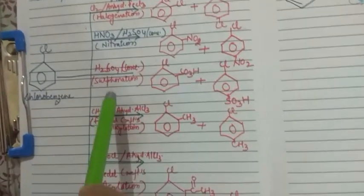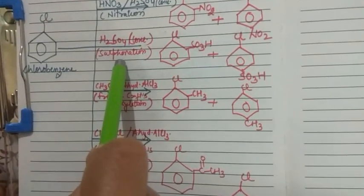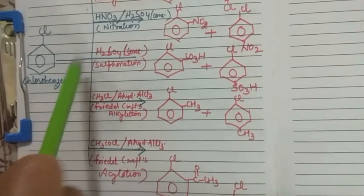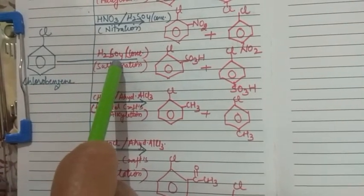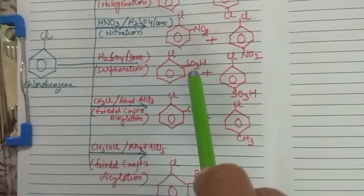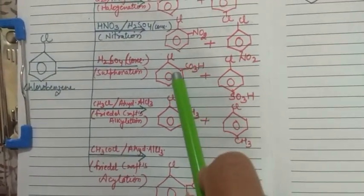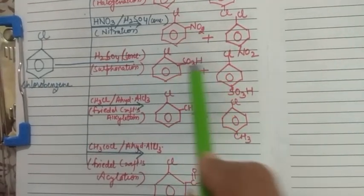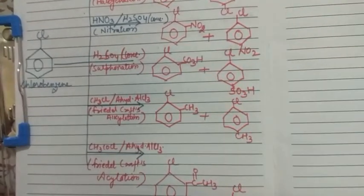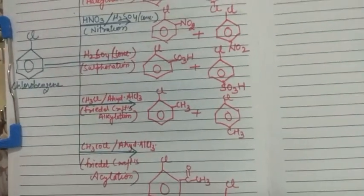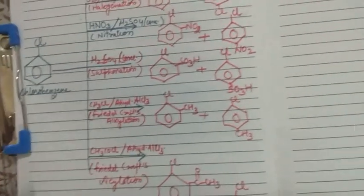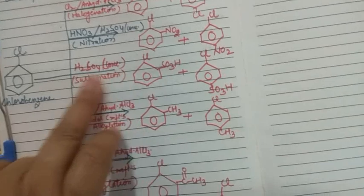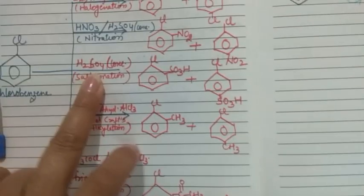Next is sulfonation of chlorobenzene. Sulfonation means the sulfonic group is added at the ortho and para position. The SO₃H group will attack at the ortho position and para position. This is known as sulfonation, and for sulfonation we will use concentrated sulfuric acid.